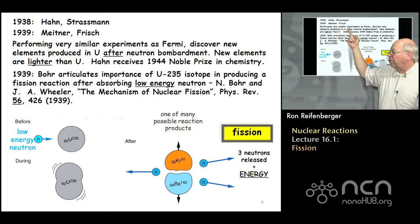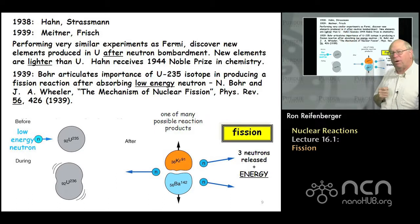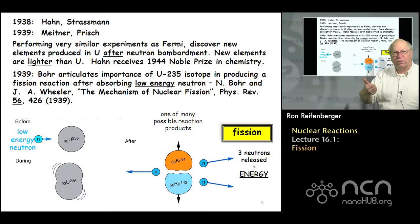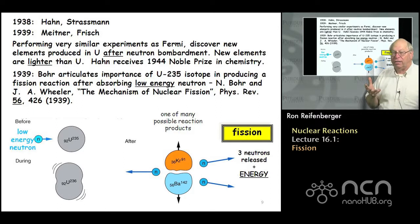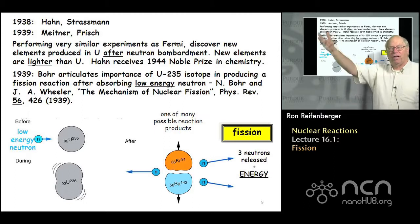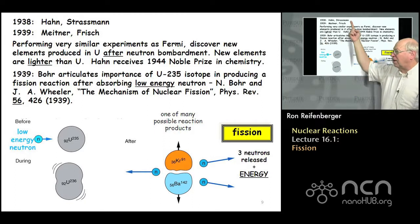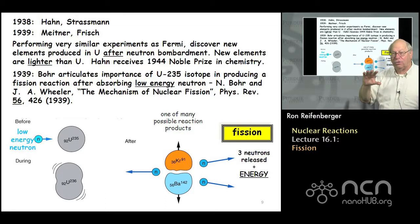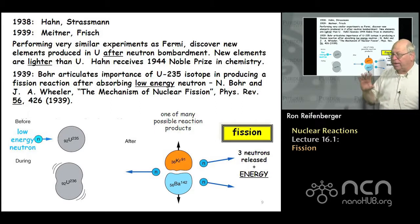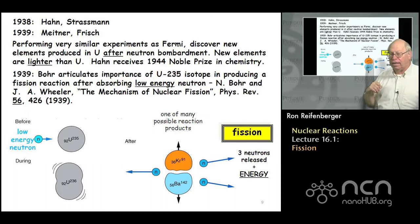In late 1938 and early 1939, these two groups performed experiments similar to Fermi's, but they realized there were elements lighter than uranium in the uranium foil after neutron bombardment—a real surprise, since Fermi had been looking for elements heavier than uranium. Hahn and Strassmann get credit for first pointing out that neutrons did cause a nuclear reaction, but the byproduct was lighter elements. Hahn received the Nobel Prize in Chemistry in 1944 for that discovery.